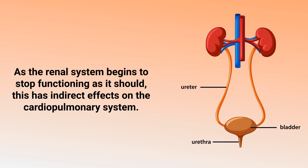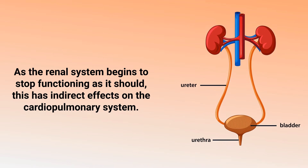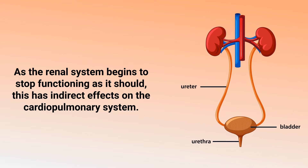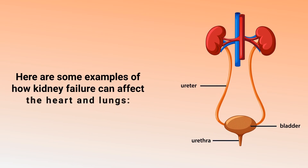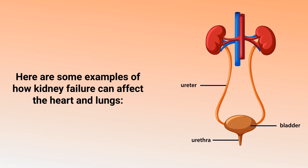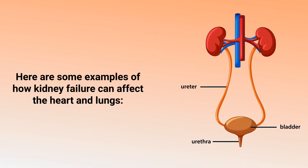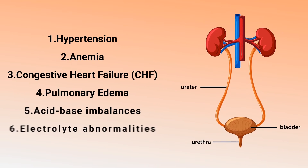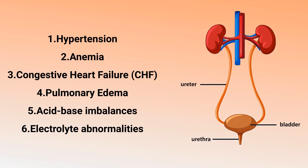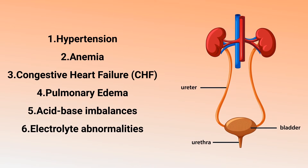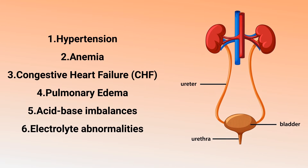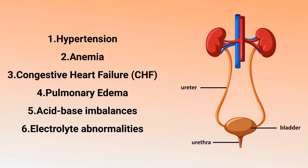As the renal system begins to stop functioning properly, this has indirect effects on the cardiopulmonary system. Examples of how kidney failure can affect the heart and lungs include hypertension, anemia, congestive heart failure, pulmonary edema, acid-base imbalances, and electrolyte abnormalities.